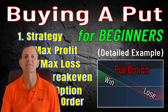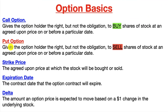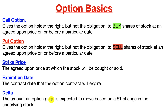Let's go over option basics and this will help us with any option strategy we use. A put option gives the option holder the right but not the obligation to sell shares of stock at an agreed upon price on or before a particular date. The strike price is the agreed upon price at which the stock will be bought or sold. The expiration date is the contract date that the option contract will expire, and delta is the amount an option price is expected to move based on a one dollar change in the underlying stock.